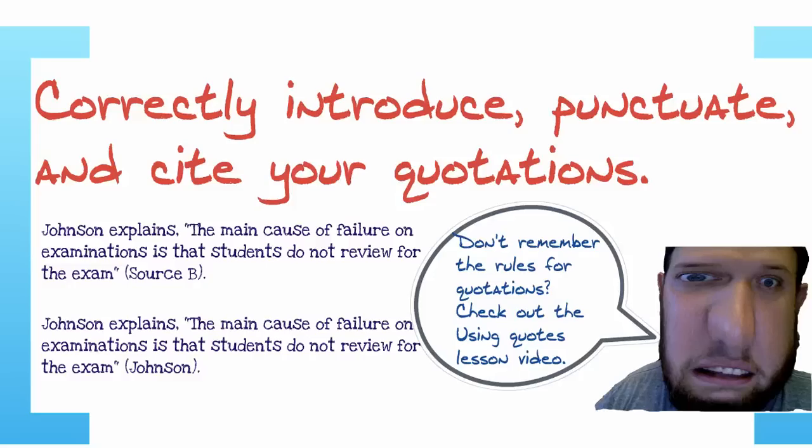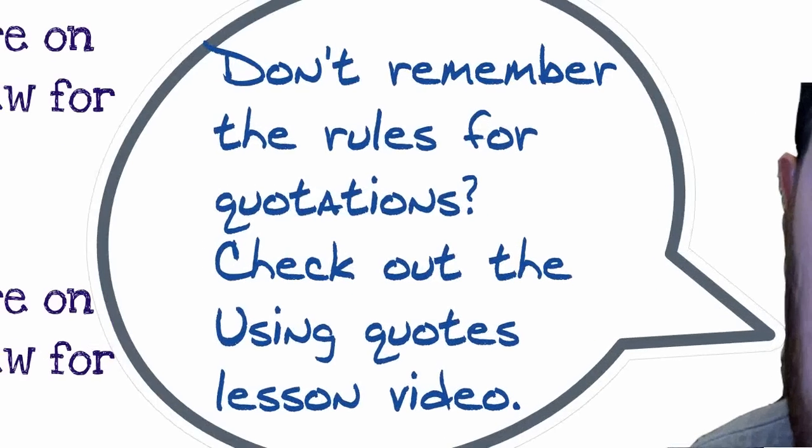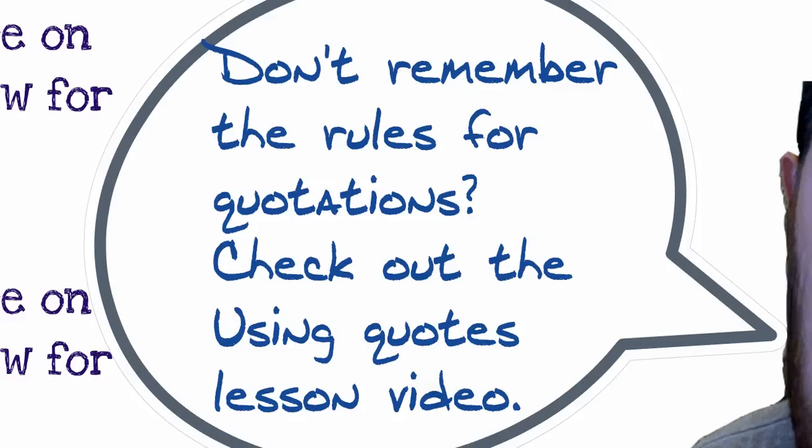you need to make sure you have internal parenthetical citation at the end of your quotes. And you can either use source B or the last name of the author. You can use the letter label of the source or the last name of the author to do that. For more details on how to do this, remember, go back to our lesson video on the rules for using quotations. And it's called the using quotes lesson video. That would be really helpful.